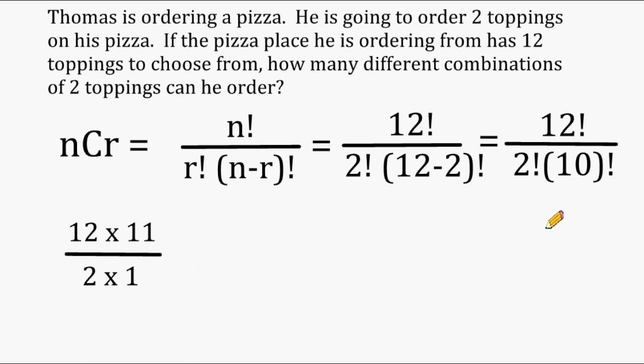And that would just leave us with 12 times 11 for the numerator and 2 times 1 for the denominator. And we can do a bit more cancellation here. The 12 and the 2 have a common factor, and we can cancel those out, or we can just look at it as 12 divided by 2, which we know is 6. So we can write that as 6 over 1.